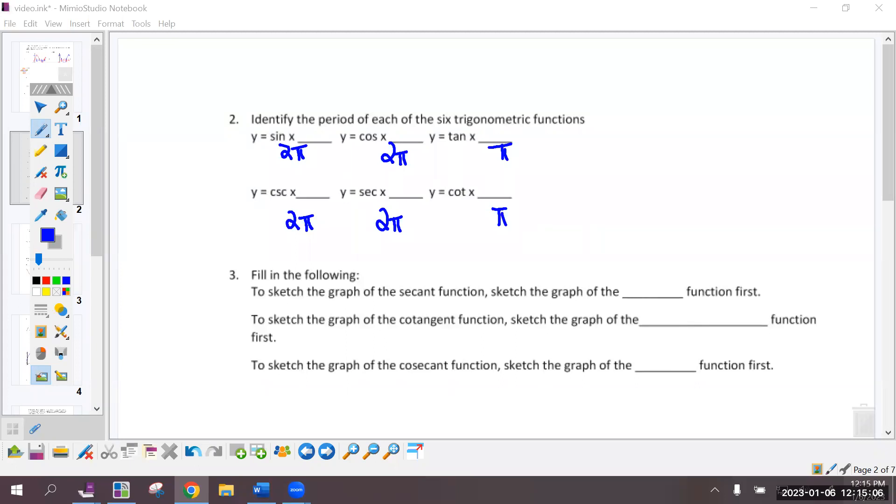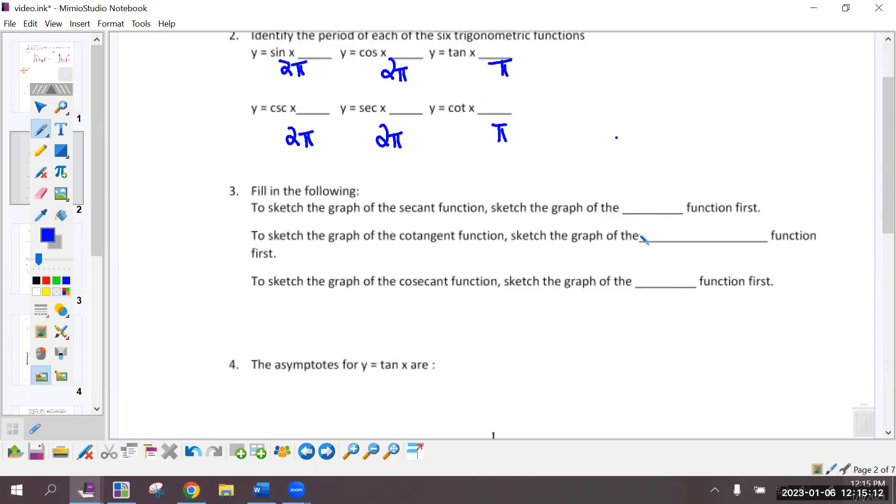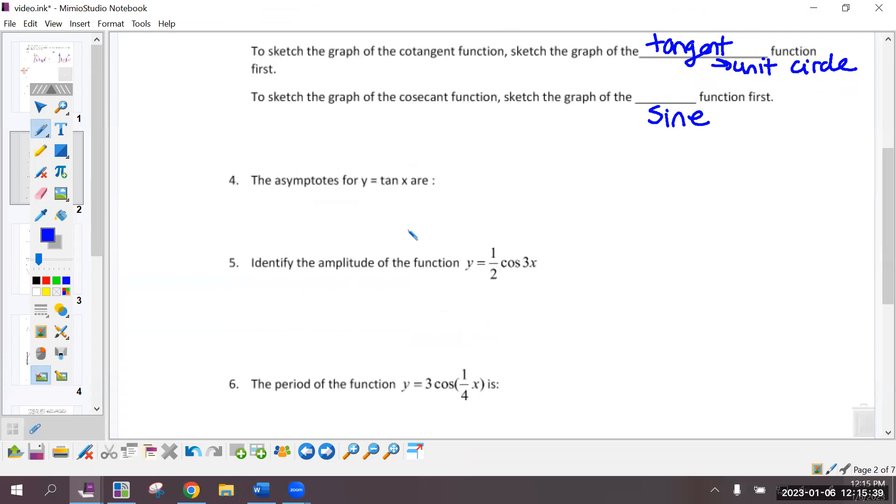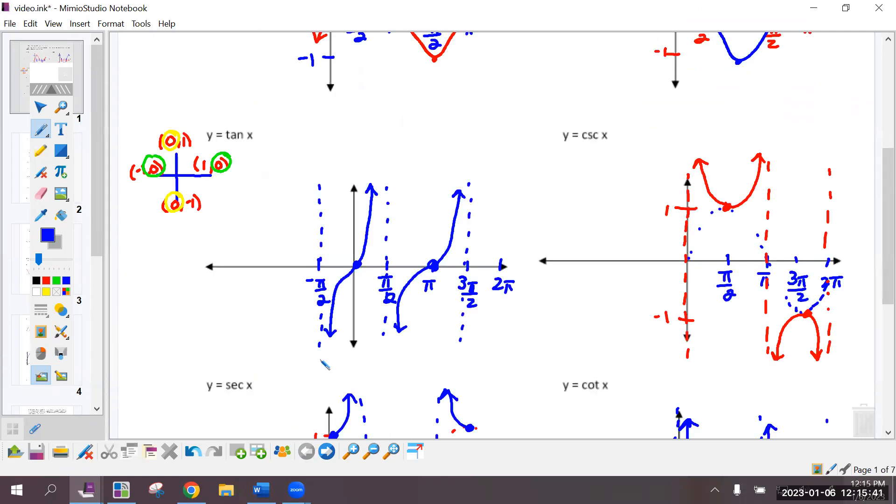For number 3, I kind of mentioned this as I made my graph. To sketch the secant function, I'm going to build that off of cosine. To sketch the cotangent, it's kind of like tangent, kind of back to the unit circle. And cosecant is built off of sine. The asymptotes for tangent, let's look back. What did we draw over here? Negative pi over 2, pi over 2, 3 pi over 2.